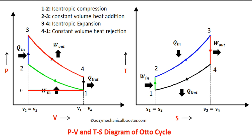The second process, 1 to 2: the piston moves from bottom dead center BDC to top dead center TDC, compressing the air-fuel mixture. The third process, 2 to 3: heat is transferred to the charge at constant volume while the piston is at TDC. Then process 3 to 4: the mixture expands adiabatically, which is called the power stroke.